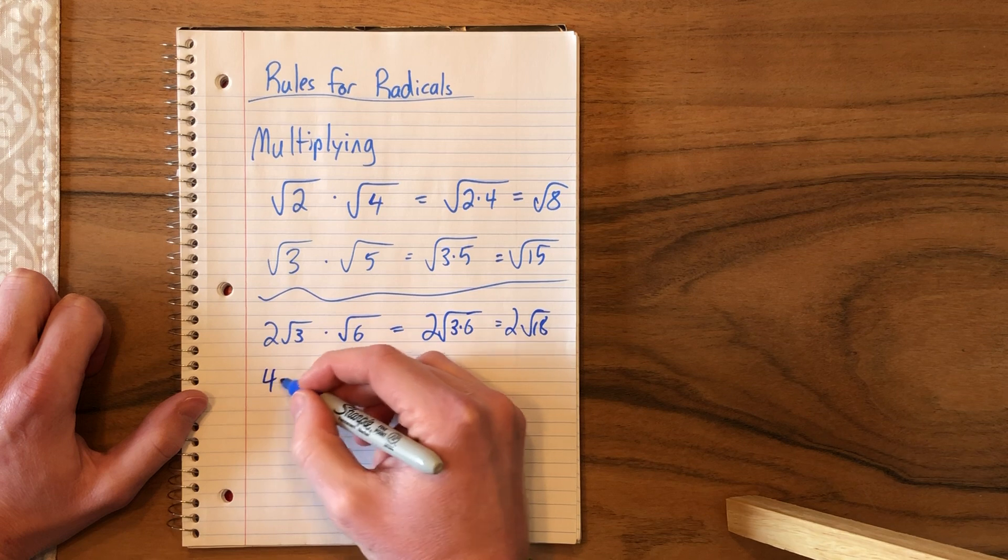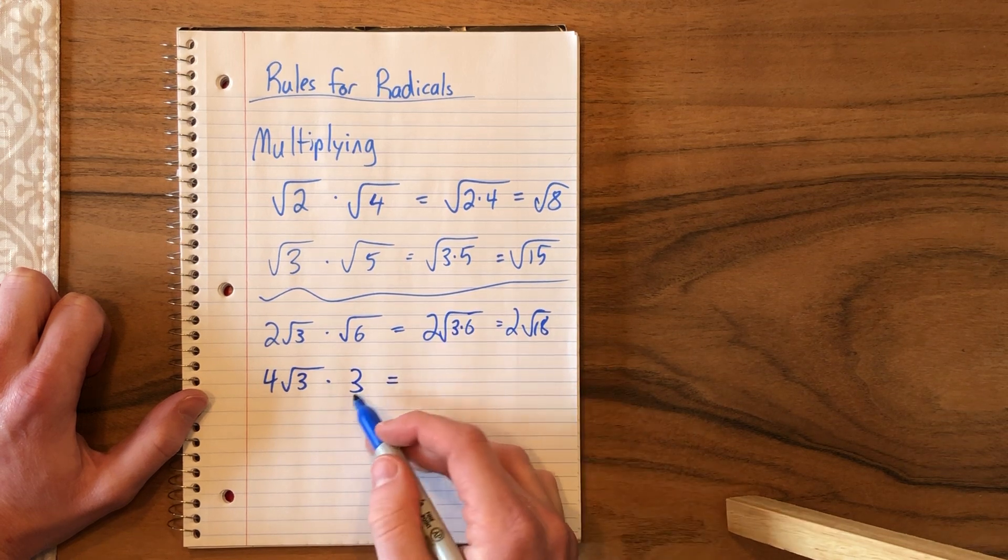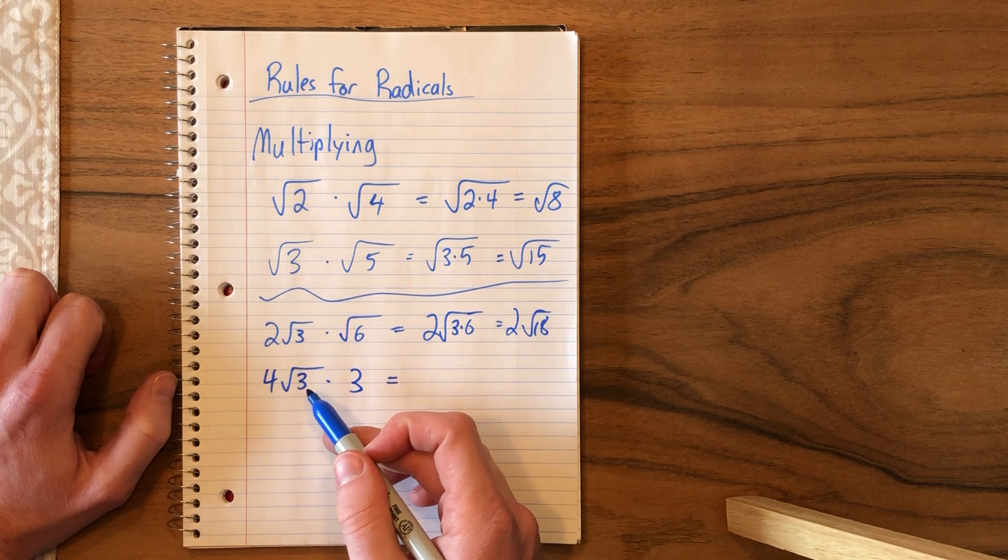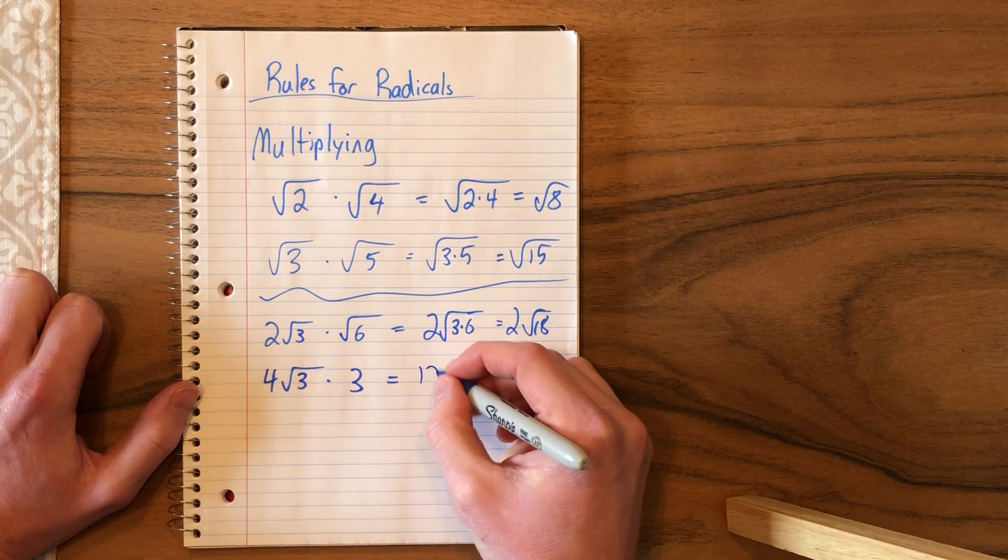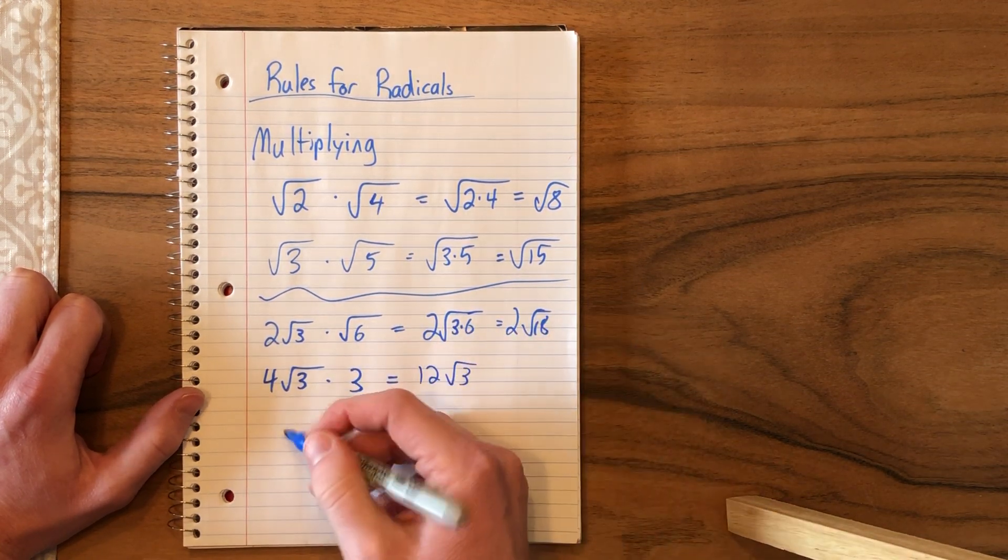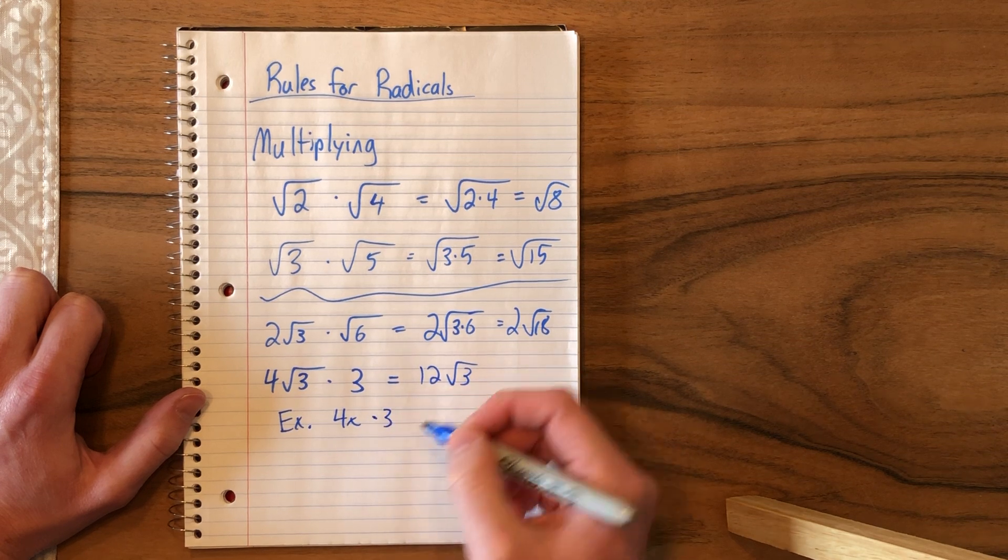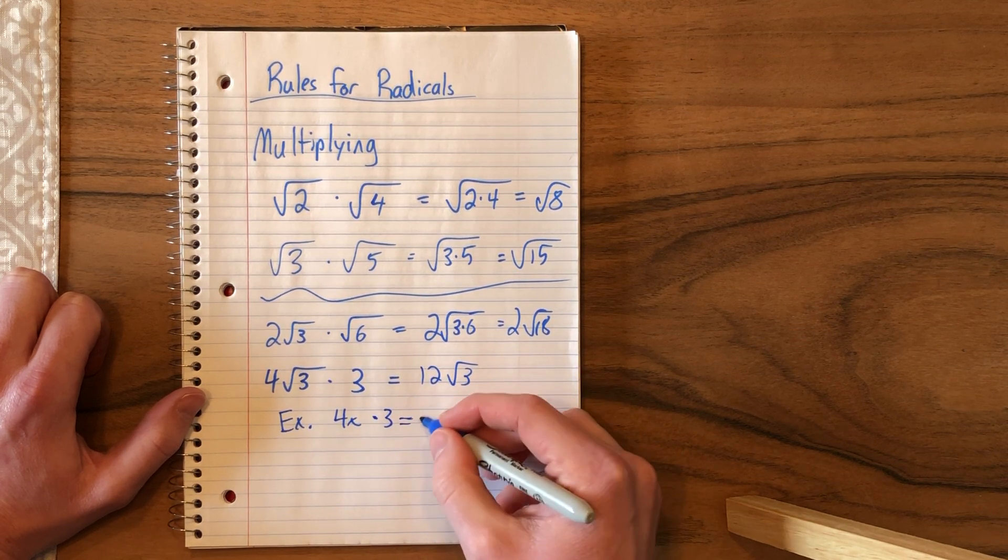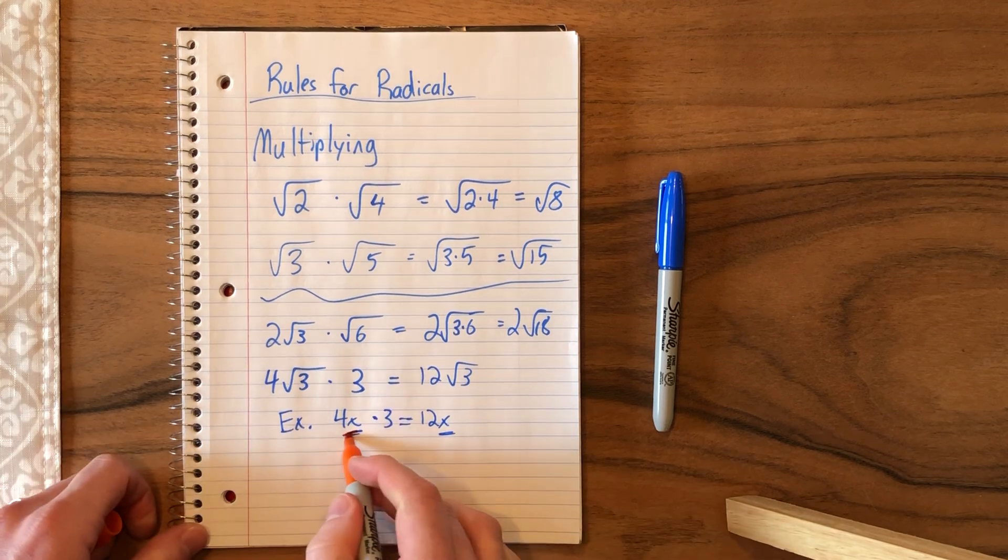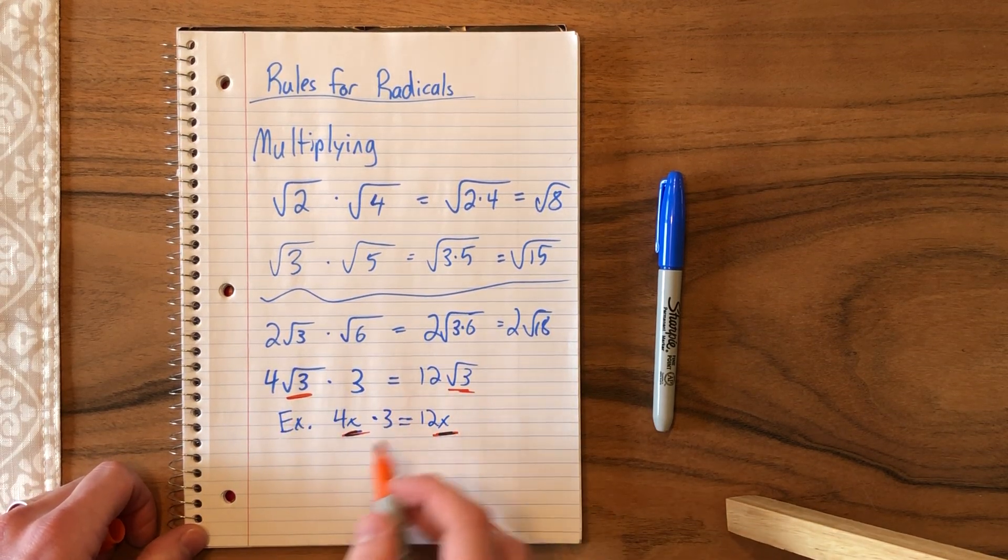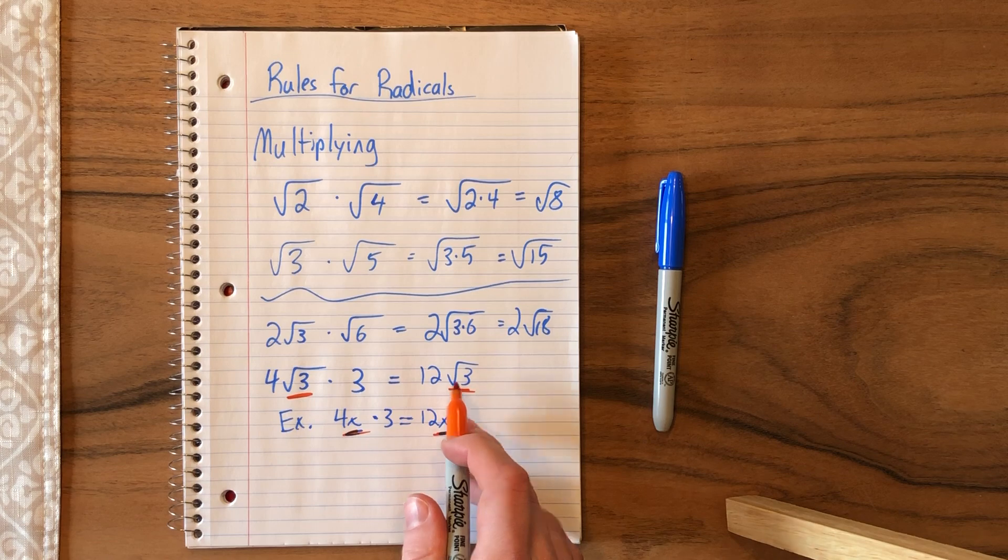However, if you multiply by a whole number, let's say you multiply it by 3, this 3 is not under the radical, which means it can't be multiplied by the square root of 3 here. It actually gets multiplied by the coefficient, the number out front. So instead, we have 12 root 3. This would be like if you take, to compare it, 4x times 3. If we multiply 4x times 3, that's 12x. This x acts similar to a square root. It's like the square root of 3. When we multiply 4x by 3, you get 12x. If you multiply 4 root 3 times 3, you get 12 root 3.